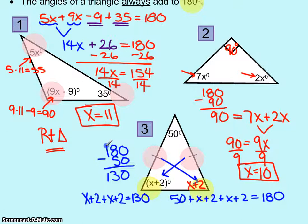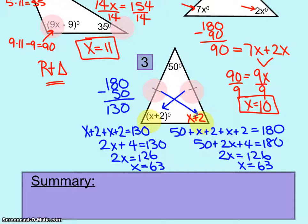Pause the video, finish this problem, and then we'll compare your answer to make sure that you're doing it correctly. You should have gotten x to be 63 degrees. Take a second to write a sentence or two to summarize what we talked about in this section. Pause your video while you do that, and then start again when you are ready for the next section.